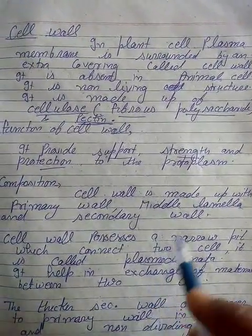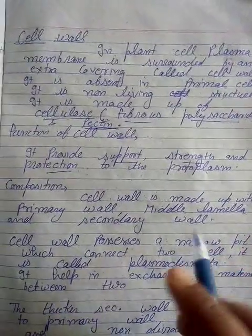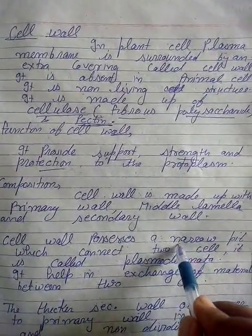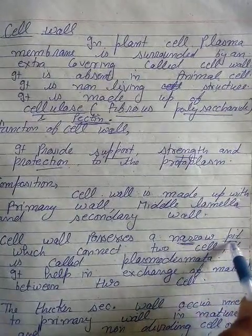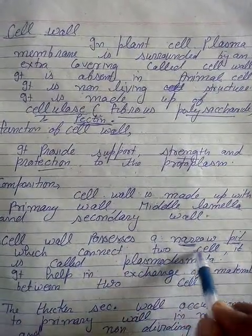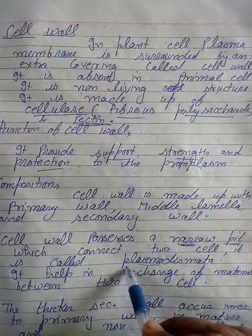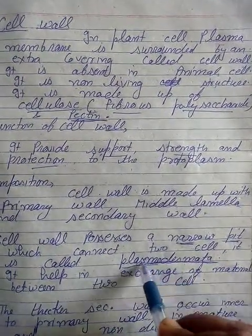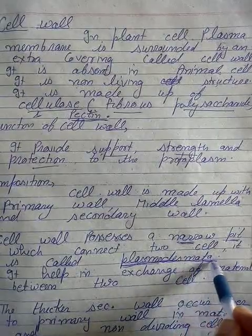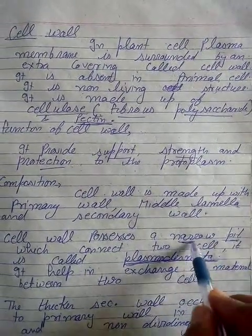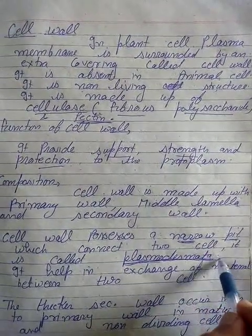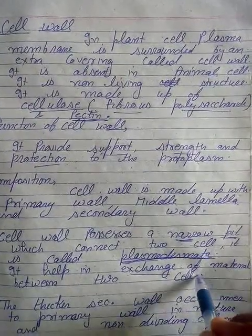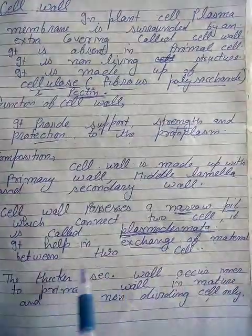Agar hum baat karte hain cell wall ki, toh two jo cells hain humare paas unke aapas mein connection kiske zariye hota hai — through a narrow pit. Yeh pit hota hai jiske zariye two cells aapas mein connect hoti hain, aur us pit ka naam hai plasmodesmata. Plasmodesmata ek tarah ka joining hai jiske zariye two cells kya karti hain — join karti hain, aur isi ke zariye material ka exchange hota hai between two cells.